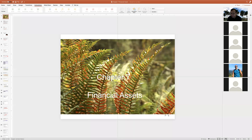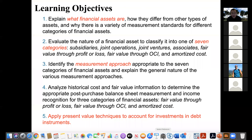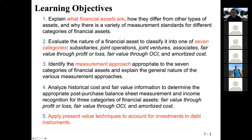I'm going to start this chapter. Chapter seven: financial assets. In this chapter, we are going to talk about first, what are financial assets — so we're going to talk about the definition — and then we are going to talk about classification of financial assets into seven categories. We're going to classify a financial asset into one of the seven categories, and the accounting standard and accounting treatment is different for each category.